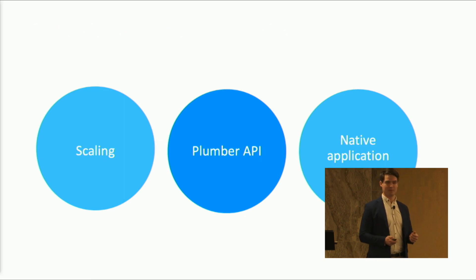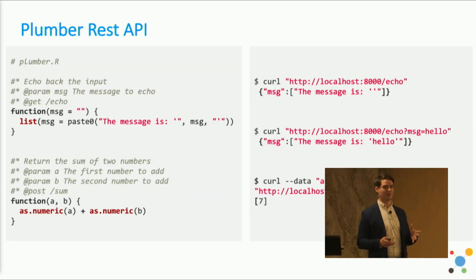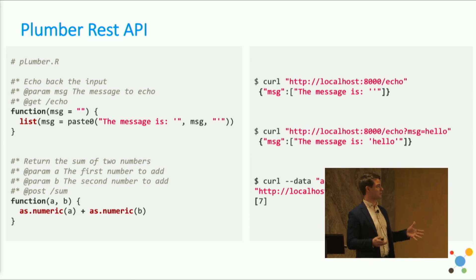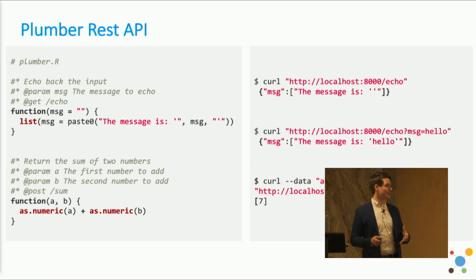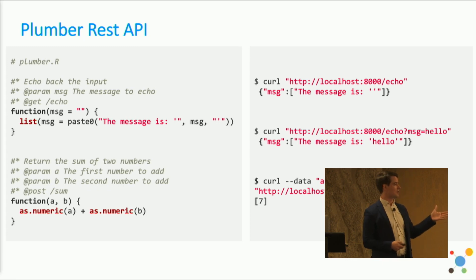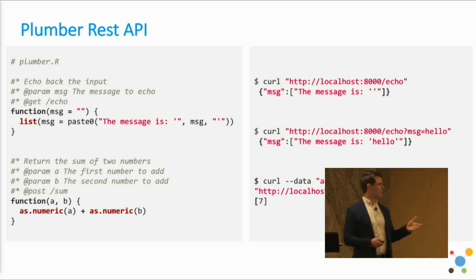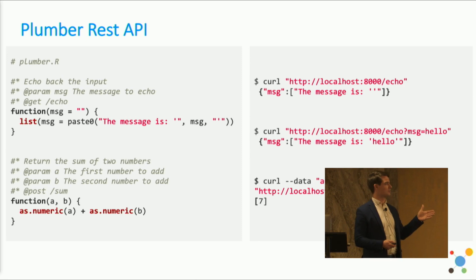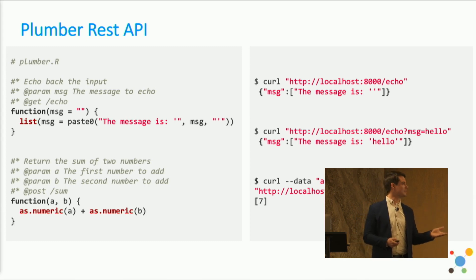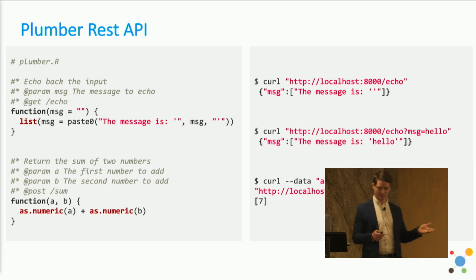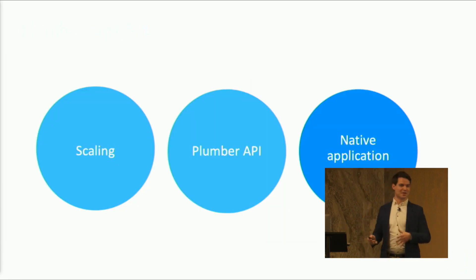Plumber is a package from RStudio that allows you to simply convert a function into an HTTP API. When you look at an example, you have a function with arguments A and B that returns a sum of those two. By adding simple annotations in the comments, you create an endpoint that, once deployed, you can call with for example CURL and pass data as a POST request to get the result.